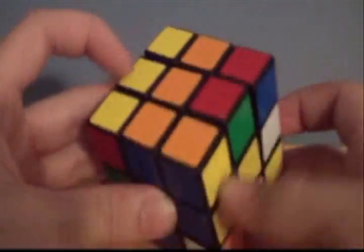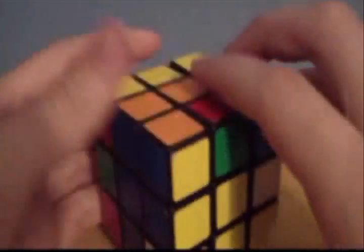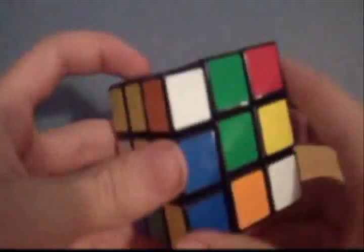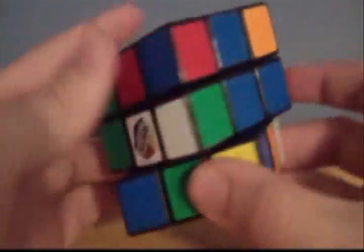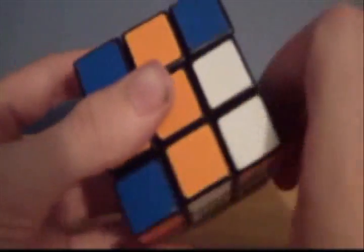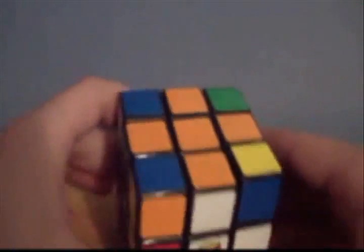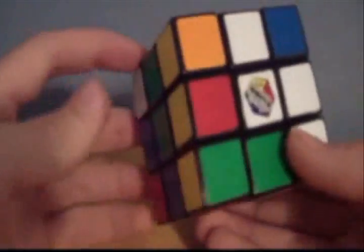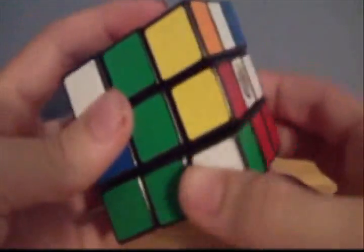Now we're going to do the same with the other ones. There's yellow, and there's the white. Now we've got to find the corners.